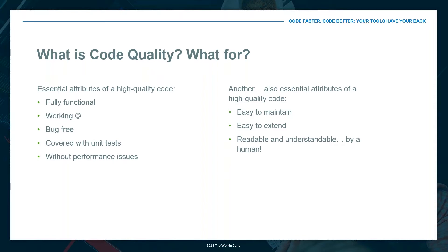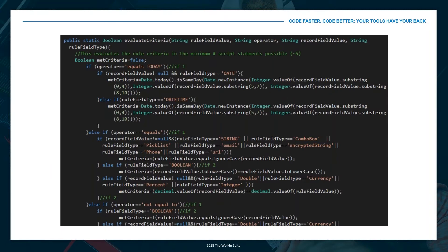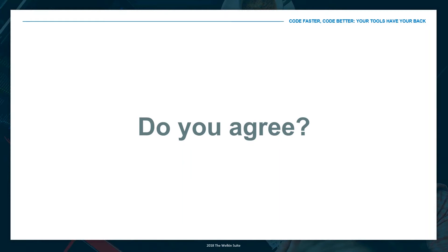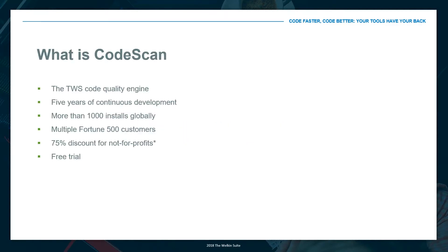There's a term we use called 'time to context' — when you look at a piece of code, how long does it take your brain to adapt and figure out what's going on? We've done some research and figured out it's many hours per week — probably 10 to 20 hours per month — of time you waste when you have bad code. The amount of time you waste switching context in your brain to understand what's going on. CodeScan is there to help guide developers to write better code all the time.